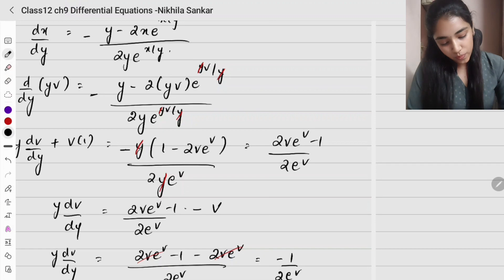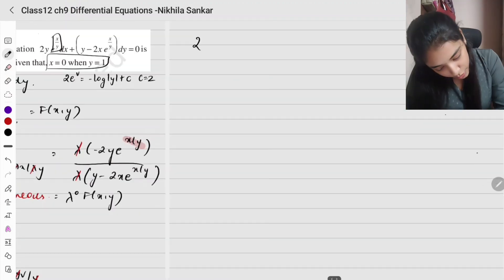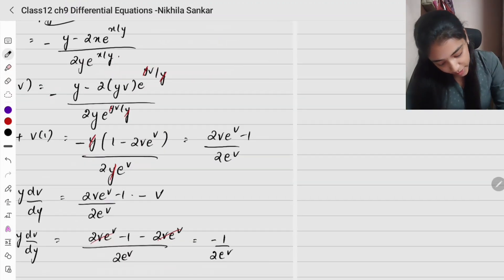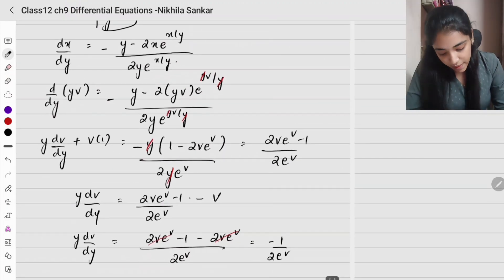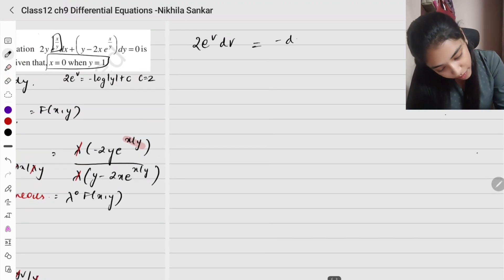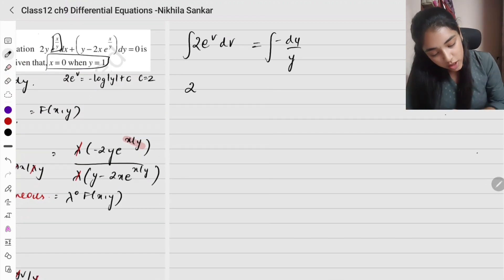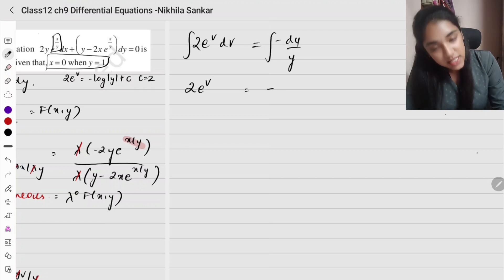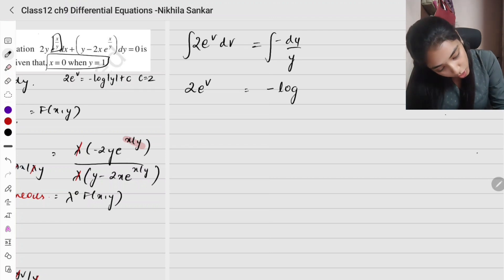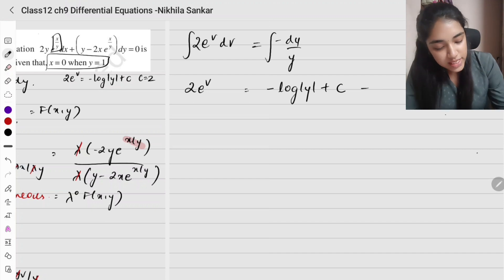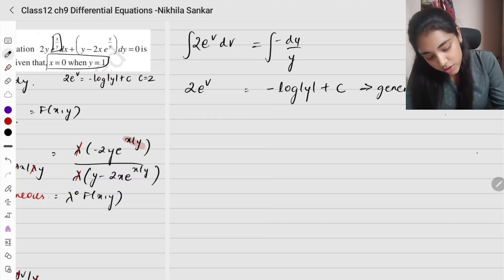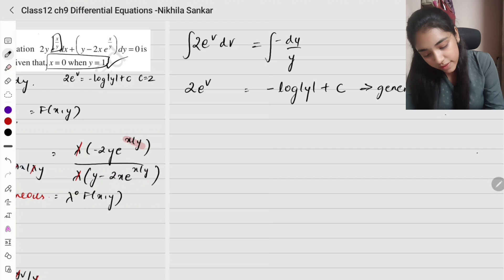The 2v e^v terms cancel, leaving minus 1 divided by 2 e^v. So 2 e^v dv equals minus dy/y. Integrating both sides: 2 is a constant, so integration of e^v is e^v, giving 2 e^v equals minus log|y| plus c. This is the general solution.